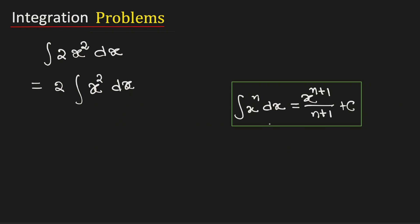In order to find this integral, we will use this power rule of integration with n equal to 2. Therefore, this will be equal to 2 times x to the power 2 plus 1 divided by 2 plus 1 plus integration constant C.